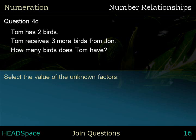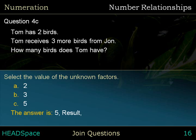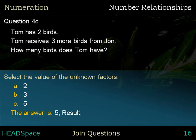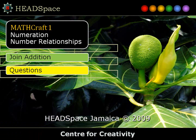Select the value of the unknown factor. The options are 2, 3, and 5. The answer is 5. Result — Factor C is unknown. Excellent!